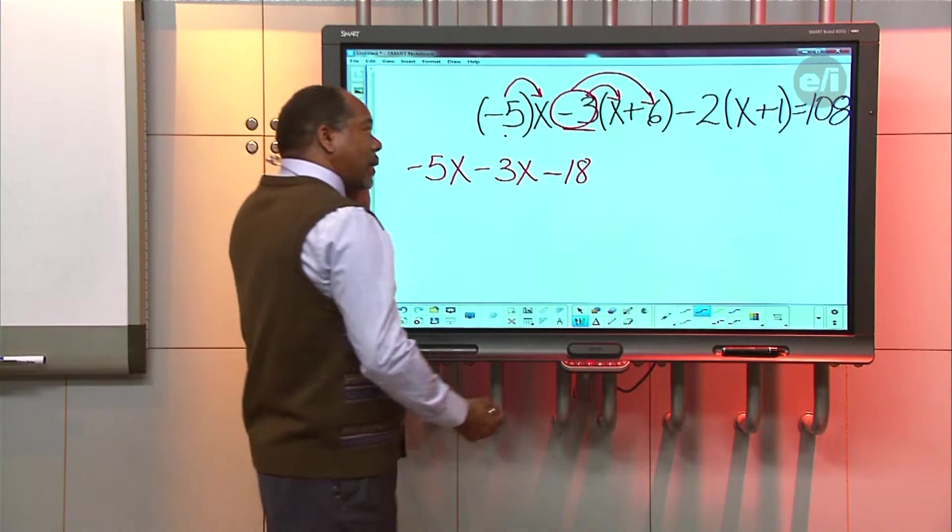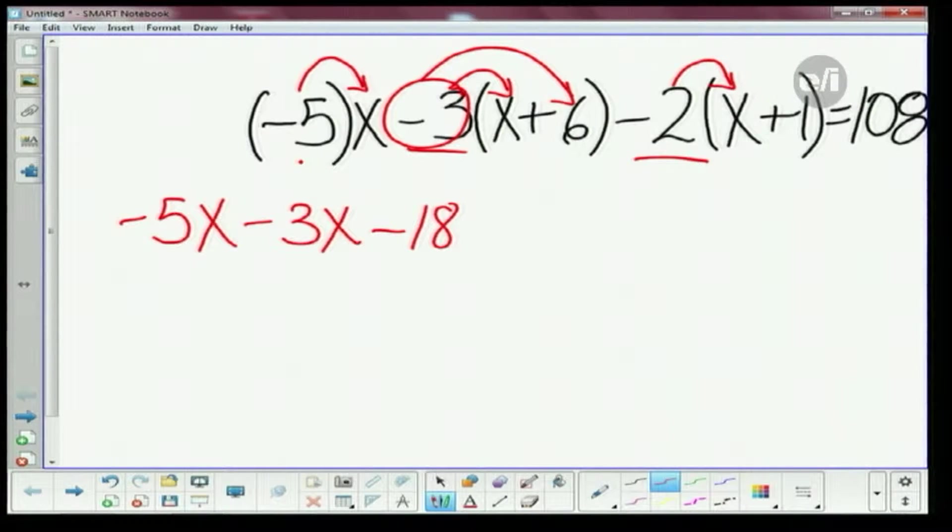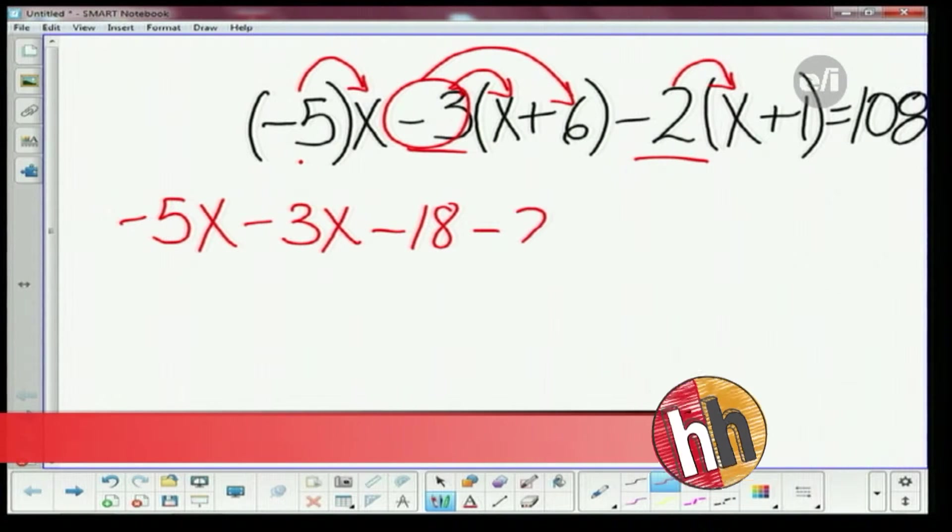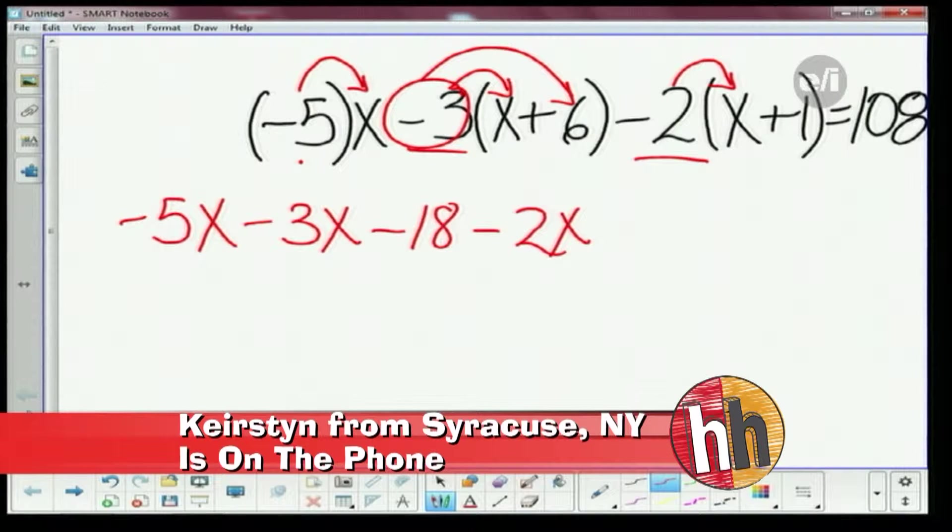The second thing that I'm gonna distribute is the negative 3 times the 6. Negative 3 times 6 is gonna give me what? Negative 18. Very good. These negative distributive problems are pretty tricky. So, again, I'm gonna take the negative 2 here, and I'm gonna distribute that, multiply that by the X, and I'm gonna get negative 2X. Very good. And I've got a negative 2, I'm gonna multiply by 1, and what do you think I'm gonna get? Minus 2. Right again. You've been right every time here. And that's equal to 108.